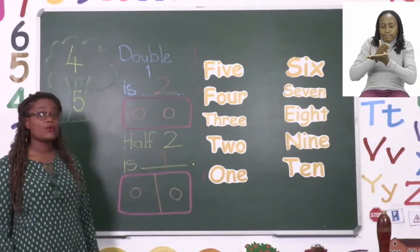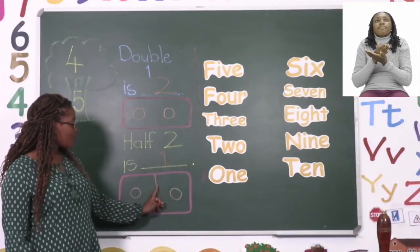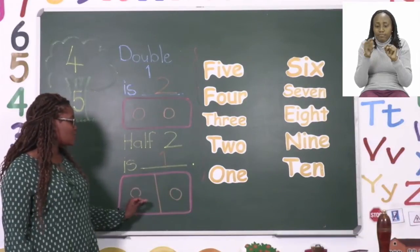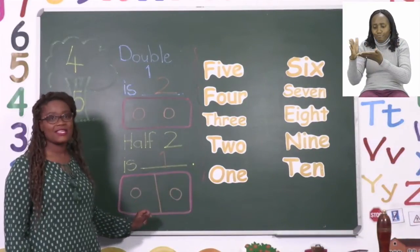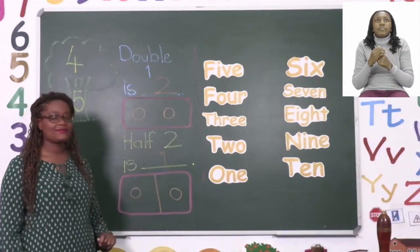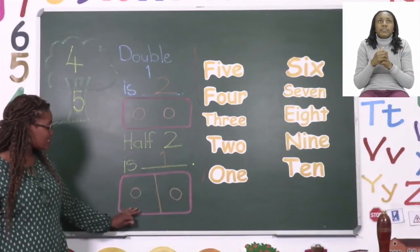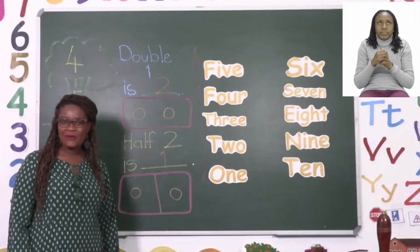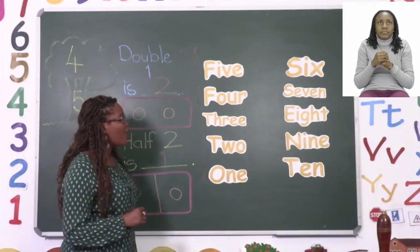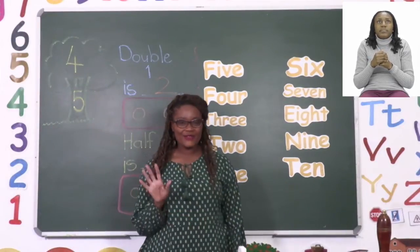And then for the halving we first make our box half and then we share equally until we get to the number that we've been given. Then we count what is on each side. When you're done with that one you can move to the next one on page five.